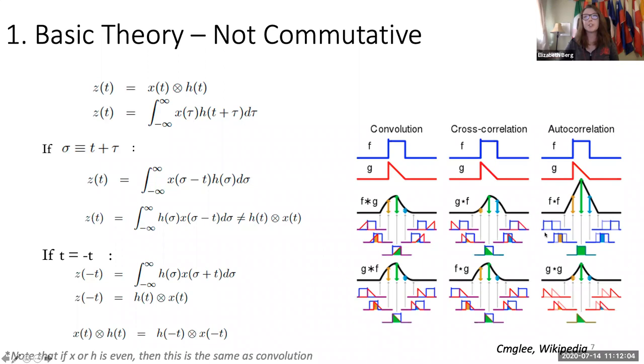This is just from Wikipedia. If you're confused about this, I would suggest going reading a little bit about it. But I just want to highlight this nice example that convolution, if you convolve f with g or g with f, you get the same results. However, if you cross-correlate g with f or f with g, you have a flip of this result here.